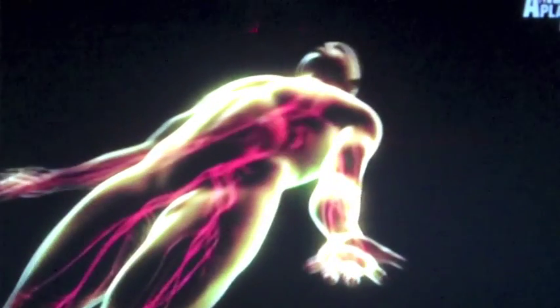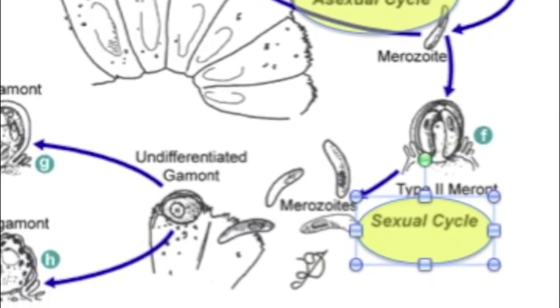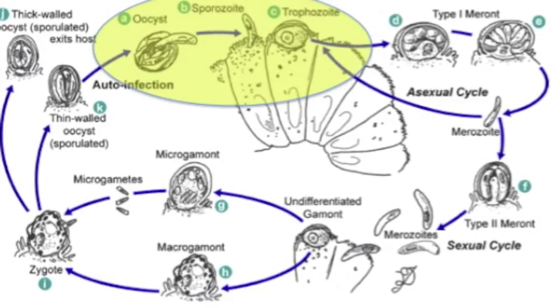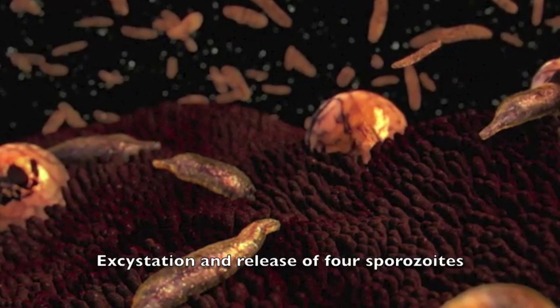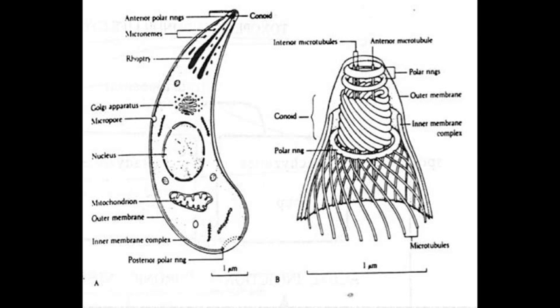Cryptosporidium parvum cells travel into the intestine where they attach to the intestinal cells. Upon attachment, the life cycle inside the host begins and the disease begins to take form. The parasite has a monoxenous life cycle, meaning the entire developmental cycle occurs within one host organism. The cycle consists of an asexual phase followed by a sexual phase. Once ingested, oocysts migrate through the gastrointestinal tract to the small intestine, where excystation occurs and four sporozoites are released and attach to the intestinal walls. Sporozoites are the cell stage that infects new host cells and are elongated forms which lack flagella but move by gliding.